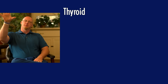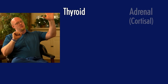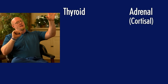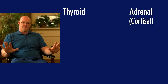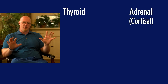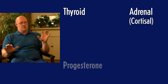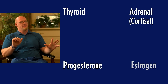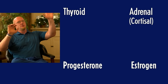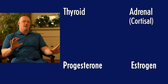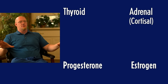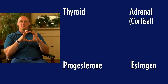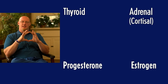You have your thyroid function, your adrenal function, and your ovary function — expressed via progesterone and estrogen. So you have thyroid, adrenal, progesterone, and estrogen, and in the center, all of these hormones are metabolized in the liver.